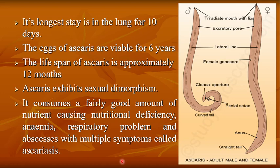In the diagram, the left specimen is male Ascaris whose posterior part is curved, with the cloacal aperture and penial setae beside it. The right specimen is female Ascaris, which is larger in size, with a straight tail and only an anus — no cloacal aperture.